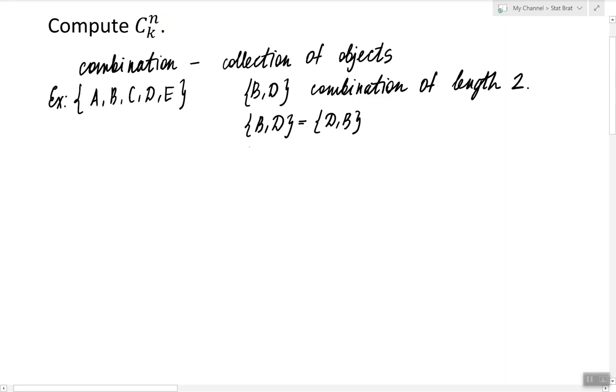And if we look at the examples of combinations of length 3 we'll see that all of these are the examples of the same combinations of three objects.